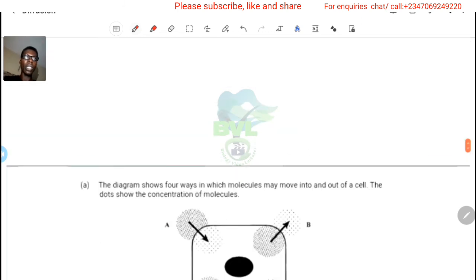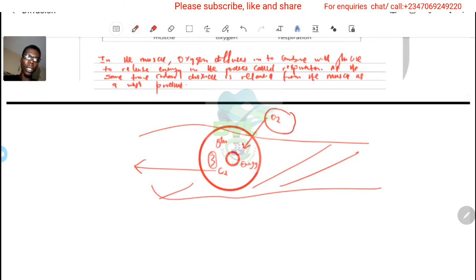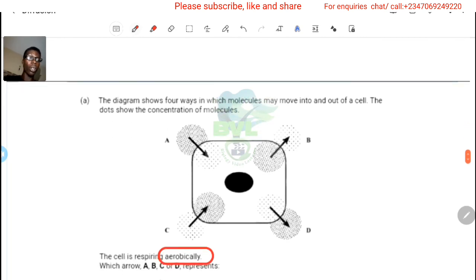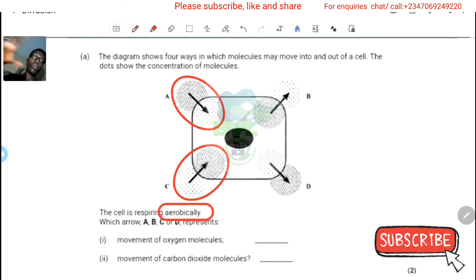We know that if the cell is respiring aerobically, oxygen will move into the cell while carbon dioxide will move out. This arrow shows something moving in, and this arrow also shows something moving in. In A, you will see there is more dots outside, which shows moving from higher concentration to lower concentration, which is what oxygen does. So the answer here is A.